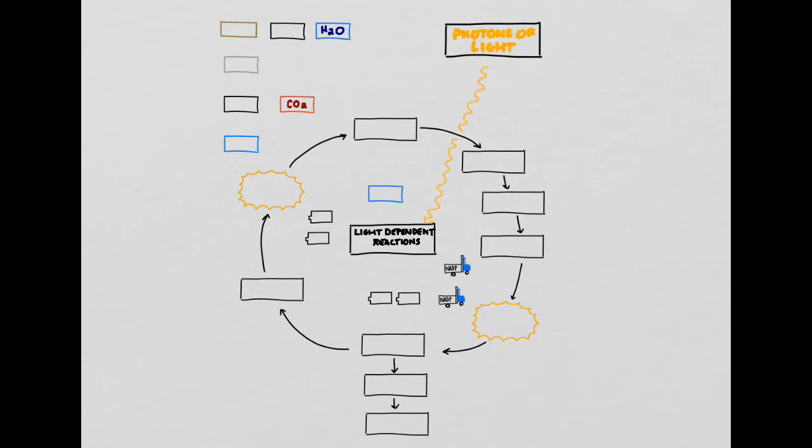Photons of light will be absorbed by the two photosystems, photosystem II and photosystem I, and then will also be involved in the photolysis of water in the light-dependent reactions. However, they don't directly play a role in the light-independent reactions.